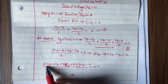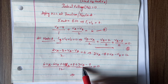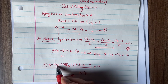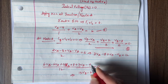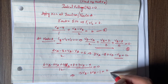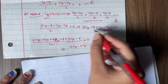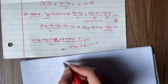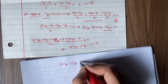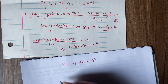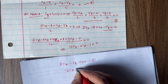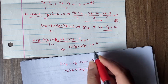Combining the Vb terms: 6Vb + 4Vb + 3Vb = 13Vb. For Va: −6Va. Constants: 8 − 9 = −1. So the simplified node B equation is: −6Va + 13Vb − 1 = 0, or equivalently −6Va + 13Vb = 1. This is Equation 2.